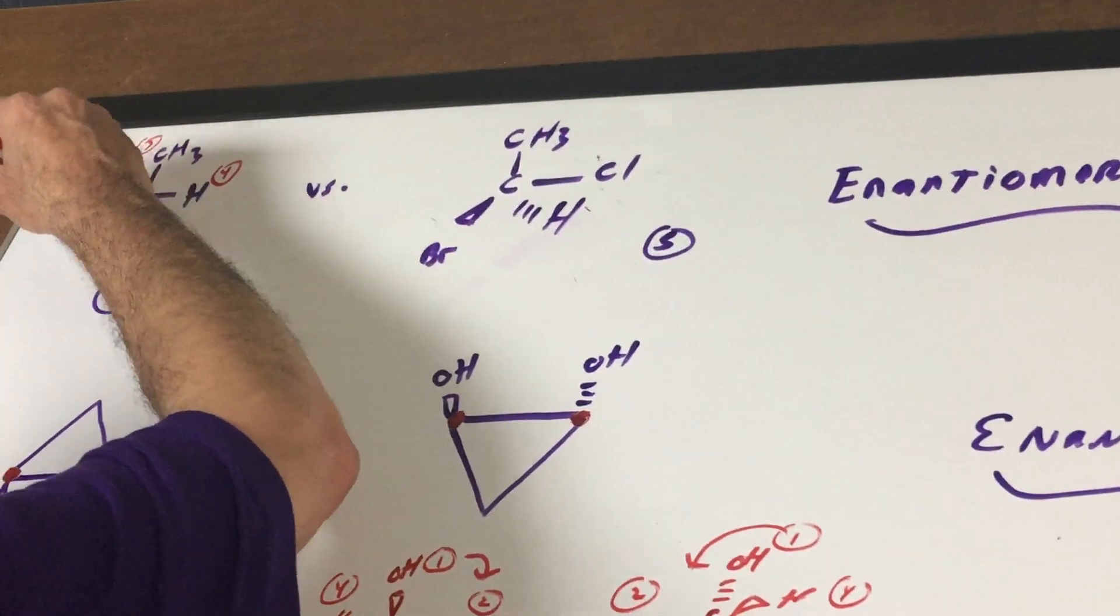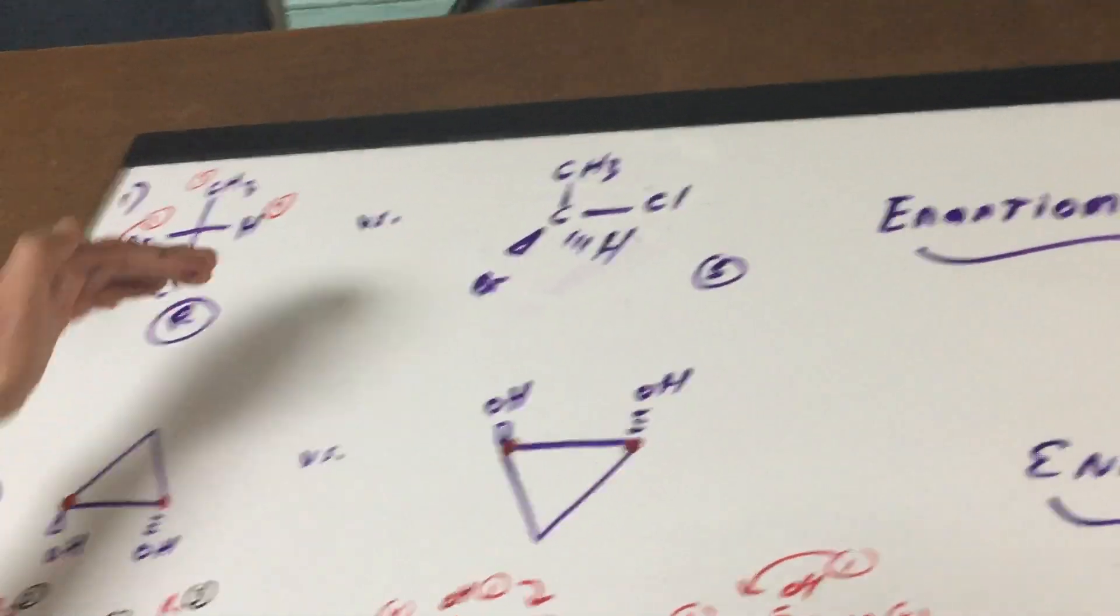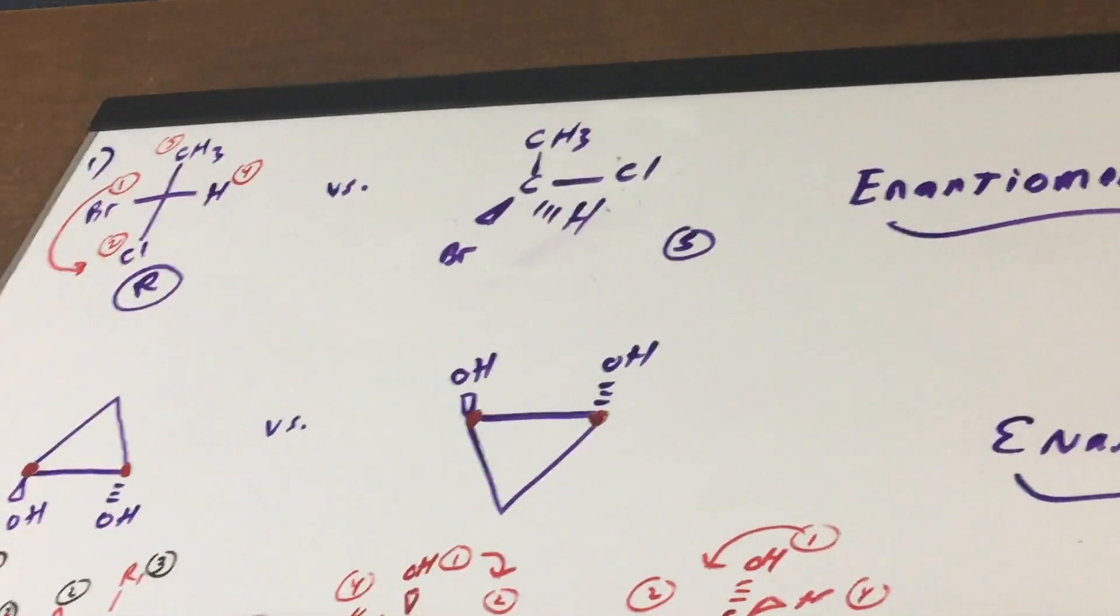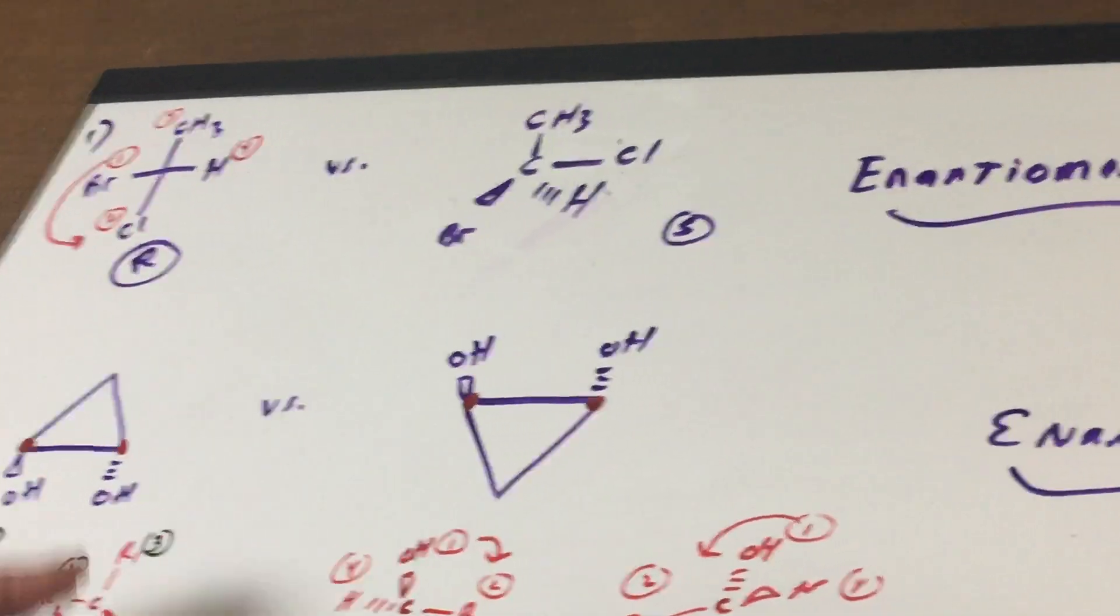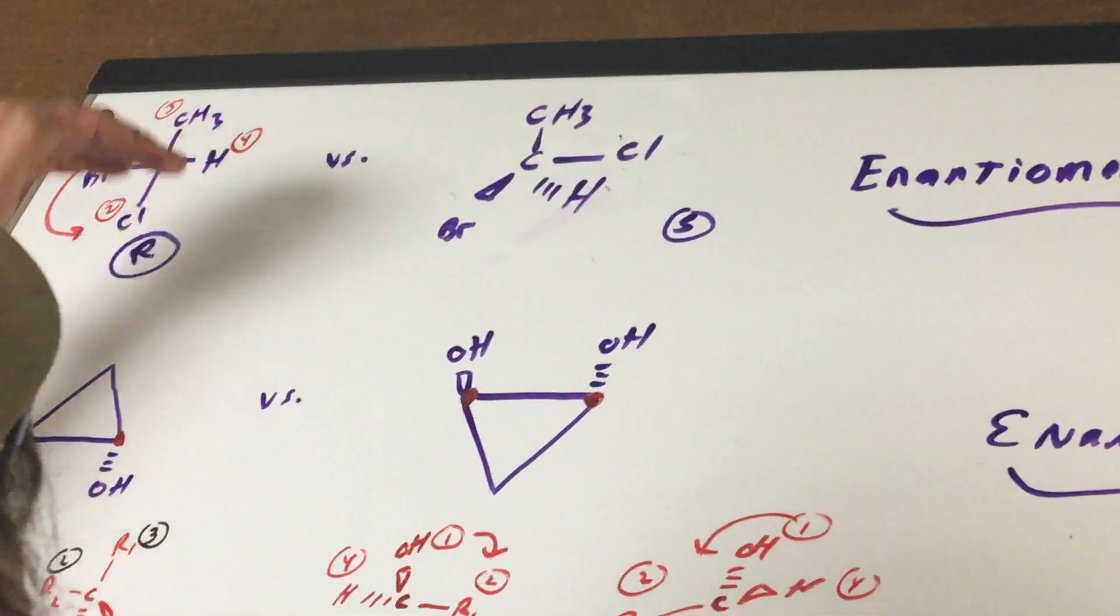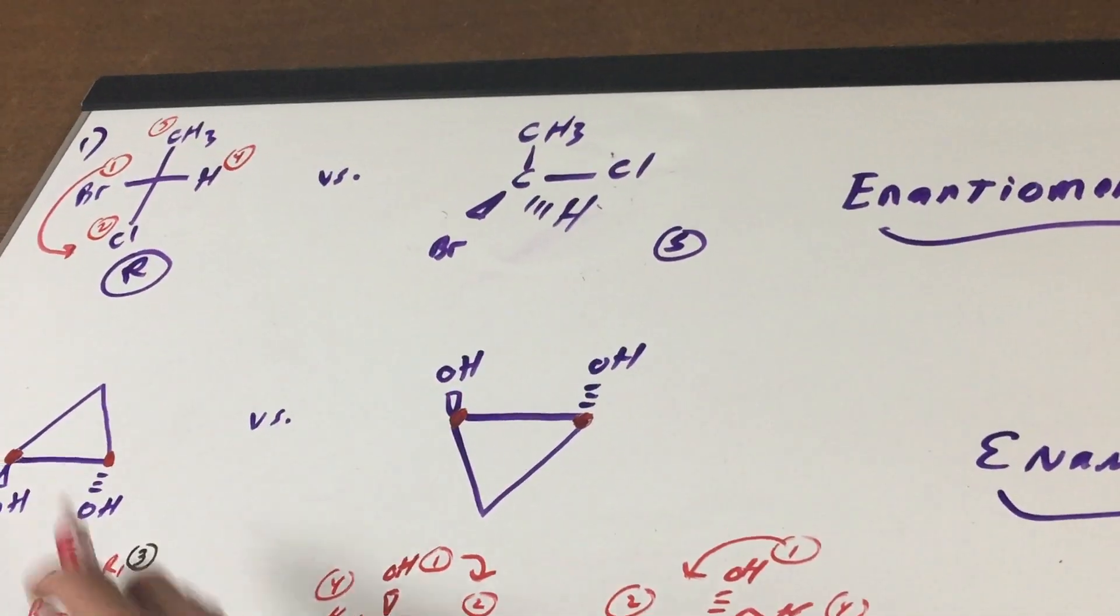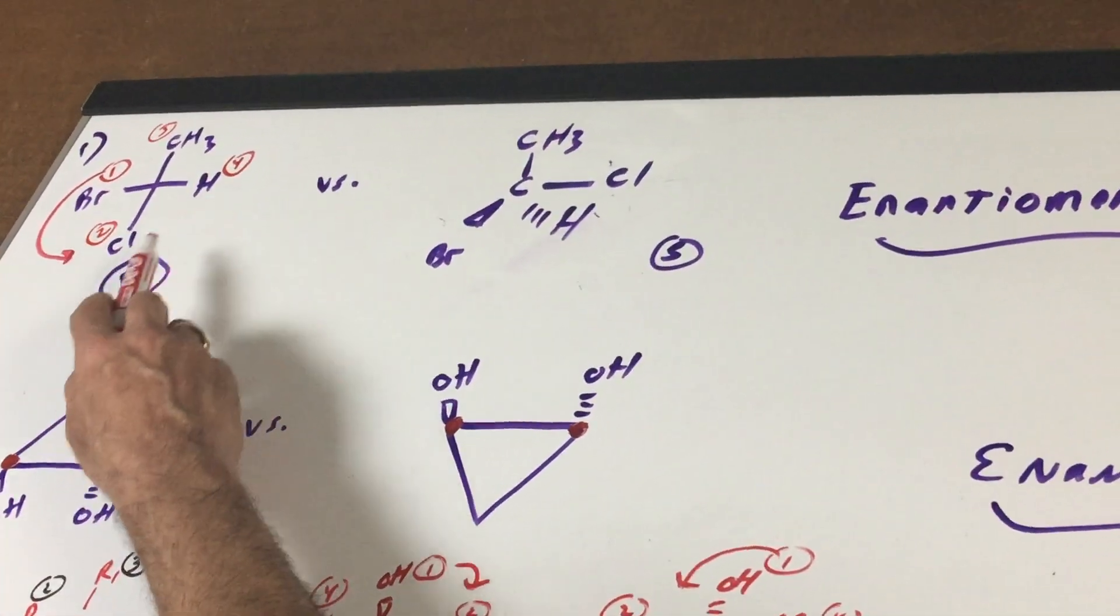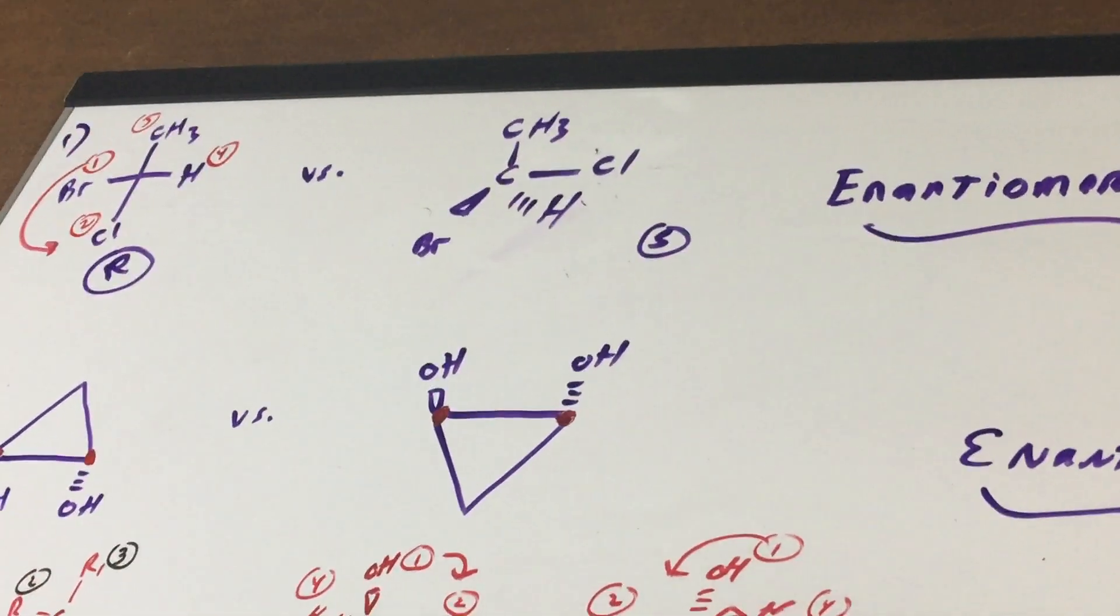So as you can see, when you connect one to two, it looks like it's an S. But if group number four, which is the group of lowest priority, it doesn't need to be an H, but it's the lowest priority group. If it's on the horizontal, you switch your thoughts to whatever you think the answer is. It's the opposite. So we think the answer is going to be an S because it's counterclockwise. Switch your thoughts and it's going to be an R. So the first molecule is an R.